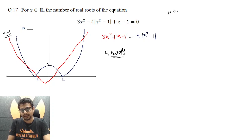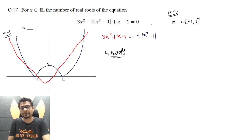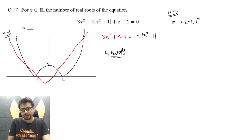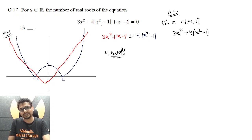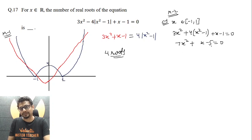You can do it alternatively using Method 2, where you make cases. The first case is x² ≤ 1, meaning x is between -1 and 1 (closed). In this case, |x² - 1| opens with a minus sign, so you get 3x² + 4(x² - 1) + x - 1 = 0, which gives 7x² + x - 5 = 0.